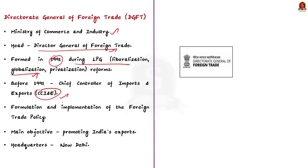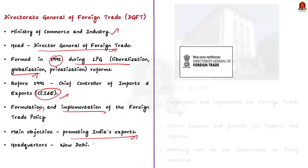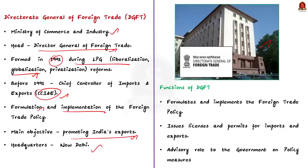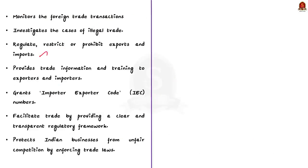The DGFT is responsible for formulating and implementing foreign trade policy. One of its main objectives is to promote India's exports. It is headquartered in New Delhi. The DGFT issues licenses and permits for imports and exports, monitors foreign trade transactions, investigates cases of illegal trade, and can also regulate, restrict or prohibit exports and imports. It plays an advisory role to the government on policy measures pertaining to national and international scenarios. The agency is also involved in providing trade information and training to exporters and importers.